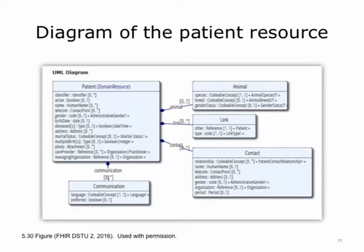Here is an information model of a FHIR resource. You will see the fields that are in the patient resource. The patient resource contains demographic information for a patient. You will also see that there are several kinds of classes linked together that are all related to the patient. Note that the patient could potentially be an animal.